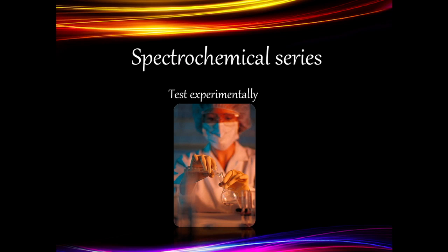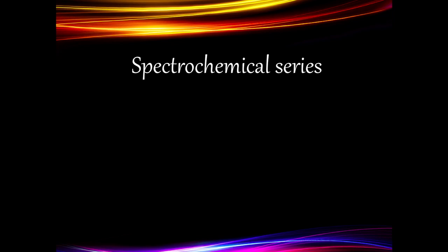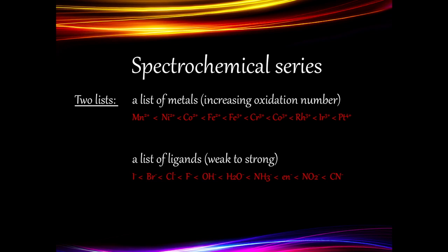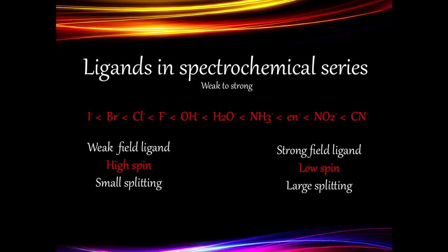The spectrochemical series has been compiled by chemists, and we cannot predict the strength of a ligand — these strengths have all been tested experimentally. The spectrochemical series is a list of ligands arranged in order of their ability to split d-orbitals in an octahedral complex. They are arranged in order of increasing ligand strength. At the far left we find the iodide ion, the weakest-field ligands, which cause the smallest splitting and give rise to high spin states. At the far right we find the cyanide ion, the strongest-field ligand, which causes the largest splitting and gives rise to low spin states.